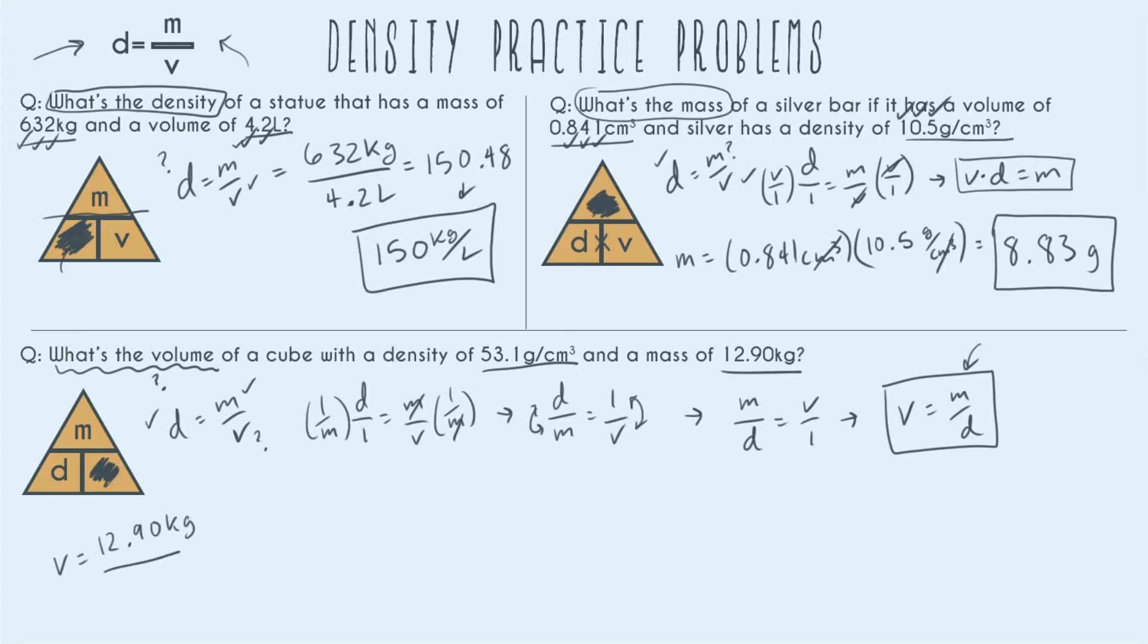Over 53.1 grams per centimeters cubed. And now we can see we're not going to be able to cancel out because we have kilograms for our mass and our density involves grams, so those don't cancel out. So we actually can't plug in right now, what we're going to have to do is do a conversion. So I think it's going to be easiest if we convert kilograms to grams and then we can go ahead and plug in.